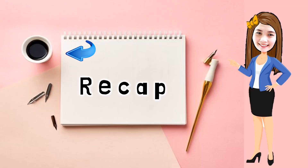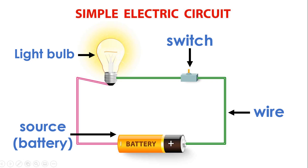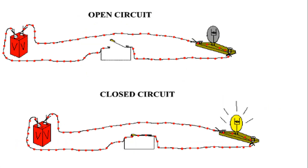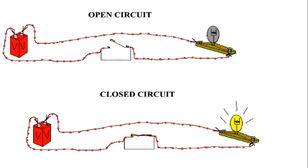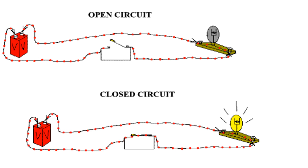In the previous lesson, you learned that an electrical circuit has four parts: a source or battery, light bulb, wires, and switch. You also learned that in an open circuit, electricity does not flow because there is a gap or no complete path from one end of the circuit to the other. While in a closed circuit, the path of electricity is complete, allowing electricity to flow through it.